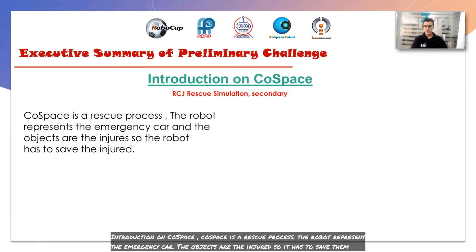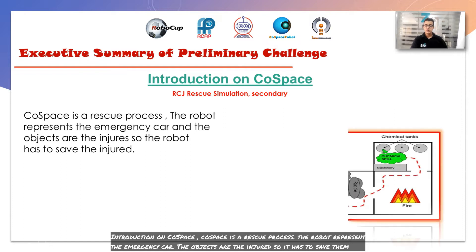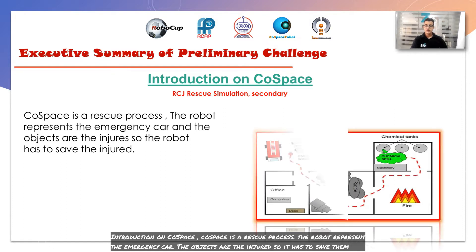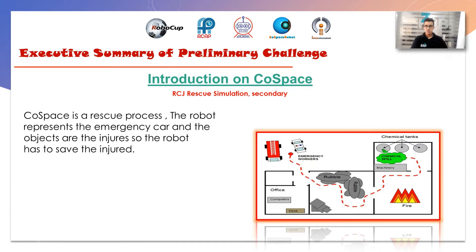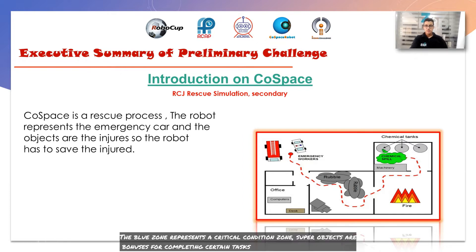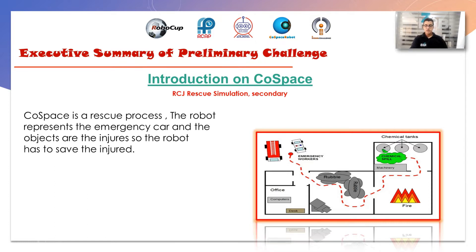Introduction to Core Space: Core Space is a rescue process with a robot that represents the emergency car and the object of the injured, so the robot has to save the injured. The blue zone represents a critical condition zone, the super-objects are bonuses for completing certain tasks, and the traps represent dangerous zones that should be avoided.